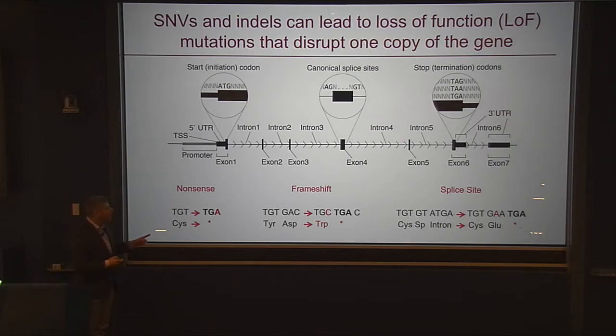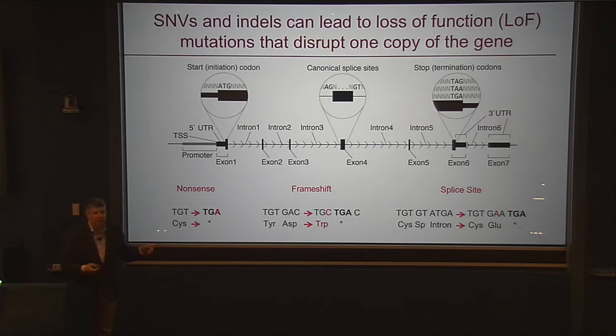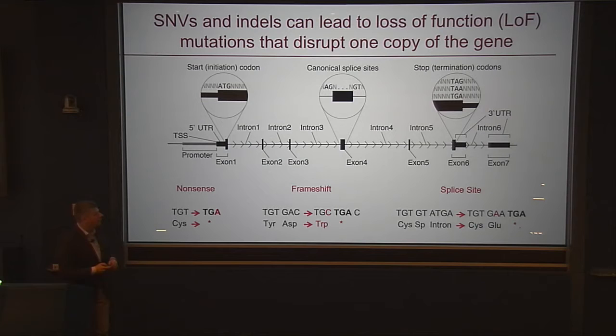Looking at SNVs and indels, there are three patterns where they can induce an early stop. The first is a nonsense mutation, where a single base change gives a stop signal too early. The next is a frameshift — DNA relies on a pattern of three base pairs, and disrupting those three base pairs again induces a TGA stop signal. Third is a splice site mutation: if the splice site is lost, instead of moving on to the next exon, we again induce a splice signal. The key point is that if we take one of these variants, we can predict it's going to completely disrupt one copy of this gene — and that is a very strong signal in terms of looking at biology.